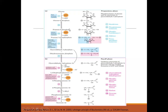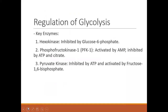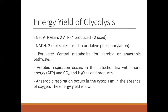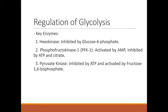Remember, 2 molecules of ATP have been used in the energy investment phase. How is glycolysis regulated? The key enzymes in glycolysis are well regulated. Hexokinase, the first enzyme responsible for the conversion of glucose to glucose-6-phosphate, is inhibited by high levels of glucose-6-phosphate. Phosphofructokinase-1, the enzyme responsible for the conversion of fructose-6-phosphate to fructose-1,6-bisphosphate, is activated by high levels of AMP and inhibited by high levels of ATP and citrate. Pyruvate kinase, which converts phosphoenolpyruvate to pyruvate, is inhibited by ATP and activated by fructose-1,6-bisphosphate.